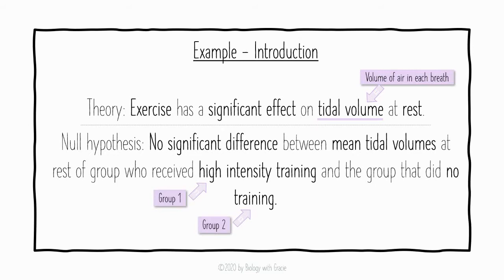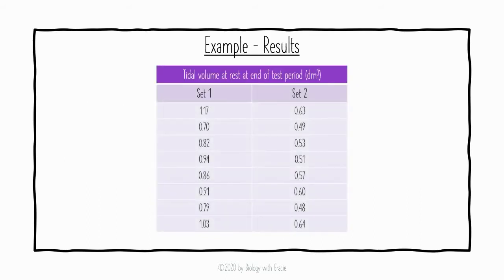Our null hypothesis is that there is no significant difference between the mean tidal volumes at rest of the group who received high intensity training and the group that did no training. After 12 weeks, the tidal volume at rest was recorded for each individual. You can see the results here: data set one is the group that performed high intensity training, and group two did no training.